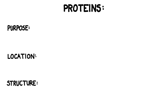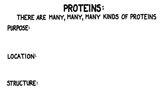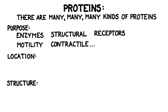Cells follow this code in order to manufacture proteins. This is actually a great way to segue into talking about proteins. It's important to remember that there are many, many kinds of proteins, and we couldn't possibly talk about them all. A few examples are enzymes, structural proteins, receptor proteins, motility proteins, and contractile proteins.